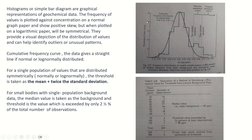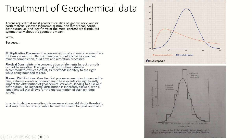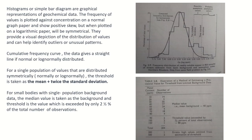Histograms are simply bar diagrams where the frequency of values is plotted against the concentration — that is, how many samples have a given concentration is plotted on the y-axis. If plotted on a normal graph paper, the geochemical data would show the orange curve — a skewed distribution. But if plotted on a logarithmic paper, it will become normal and symmetrical. Similarly, cumulative frequency curves would plot as a straight line for both normal and log-normal distributions.